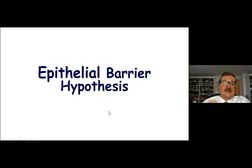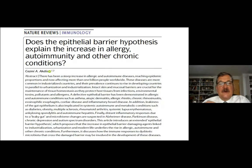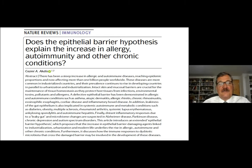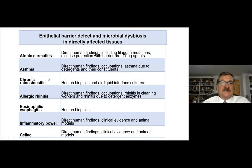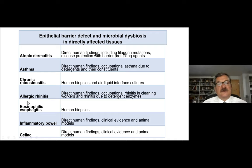From this research, we developed the epithelial barrier hypothesis, which explains why diseases of allergy, asthma, and autoimmune conditions increased significantly during the last decades — mainly after the 1960s. It has three groups of diseases. The first group involves epithelial barrier defect and microbiome dysbiosis in directly affected tissues: atopic dermatitis, asthma, chronic rhinosinusitis, allergic rhinitis, eosinophilic esophagitis, inflammatory bowel disease, and celiac disease.